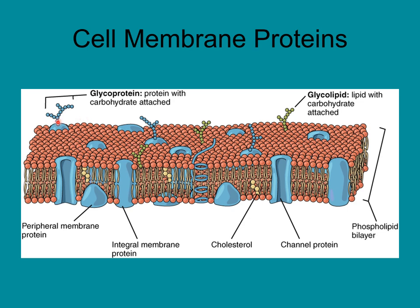Some of these markers distinguish your cells as animal cells or more specifically as human cells, and some are unique to you — your markers would be different than anyone else's. The ring structures visible in the diagram are the cholesterol molecules helping to stabilize the entire membrane. Remember the fluid mosaic model — there's some side-to-side movement in the membrane.